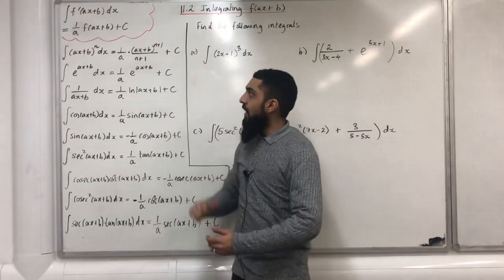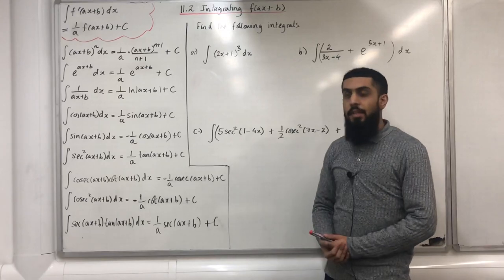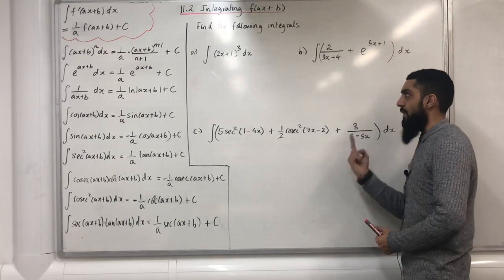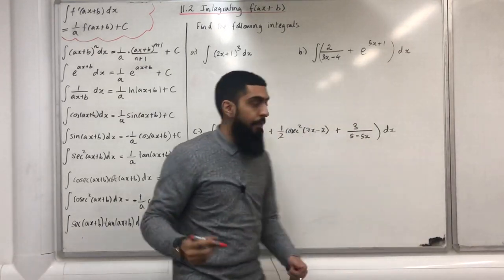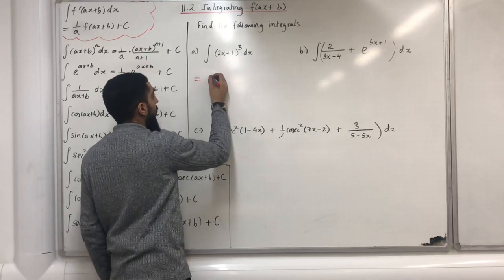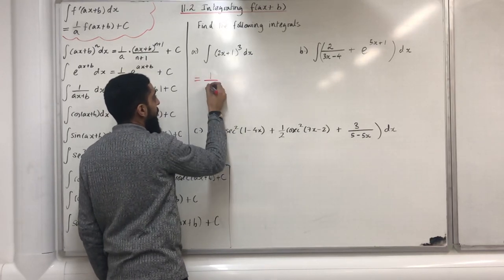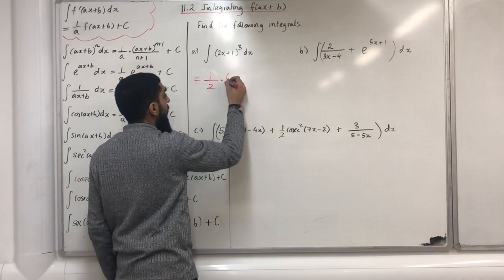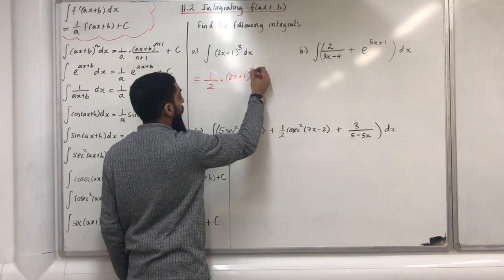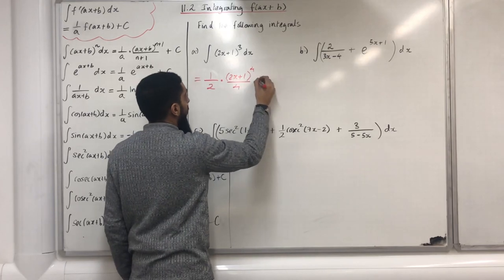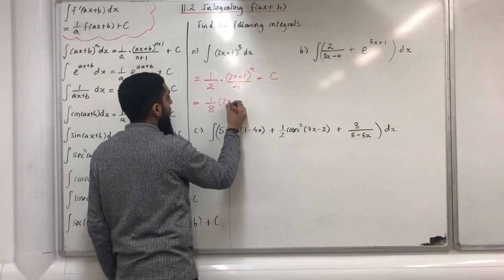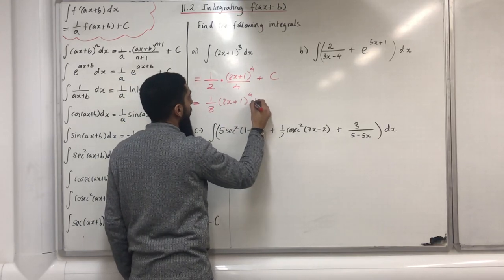Here I've got my generalised statement and I've used that statement to write the following integrals. Let's have a look at part a. This integrates to 1 over the coefficient of x, which is 2, multiplied by (2x + 1) to the power of (3 + 1), which is 4, divided by 4, plus c. I can simplify this and write 1 over 8 times (2x + 1) to the power 4 + c.